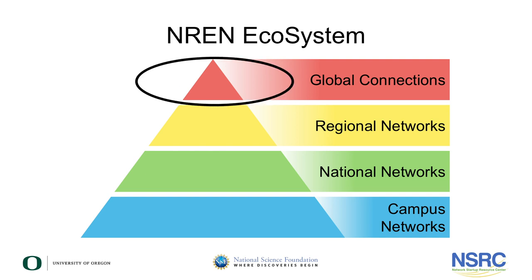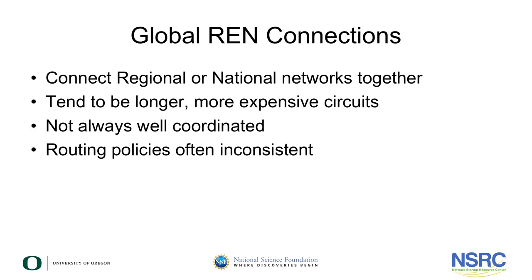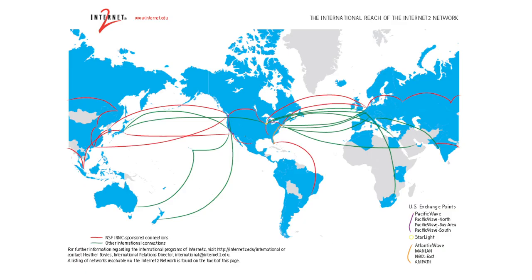First, let's take a look at global connections. Global connections are long, expensive circuits that cross oceans to connect national and regional networks together. These circuits are not always well coordinated and often have inconsistent routing policies.